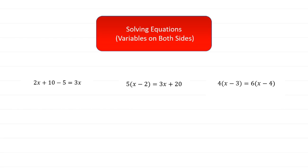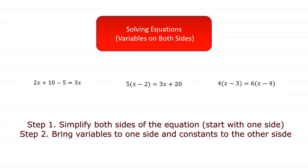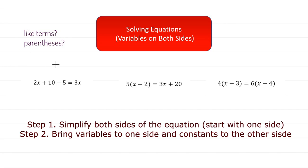Solving equations where we have variables on both sides is one of the last types of equations we learned to solve, and it's pretty straightforward. It looks weird because we're so used to variables on one side. Generally, what you want to do is take a look at one side of the equation and see if there's something we can simplify — like terms, parentheses where we could use the distributive property, something like that — and then simplify that completely.